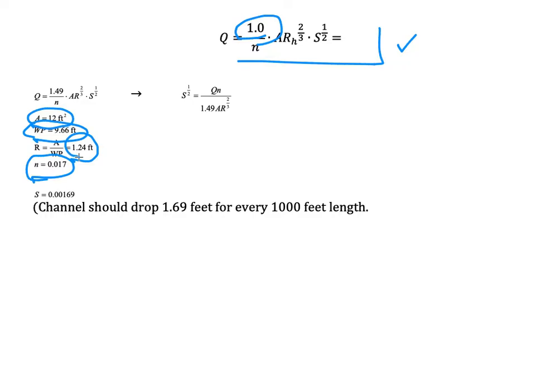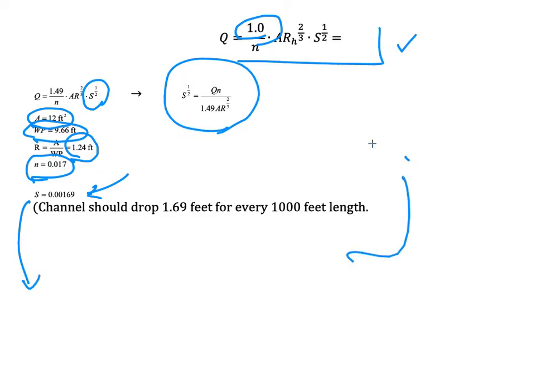Since we are solving for S, we rearrange the Manning equation. Substituting all values, we get S equal to 0.00169. This means the channel drops 1.69 feet for every 1000 feet of length. Please make sure you understand the meaning of this slope value. You should try this at home.